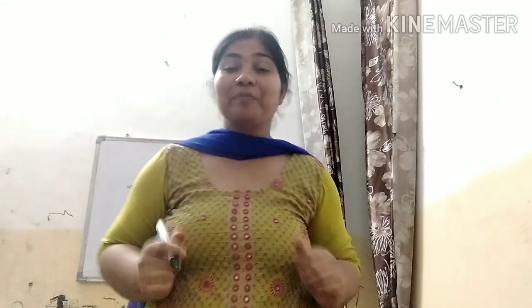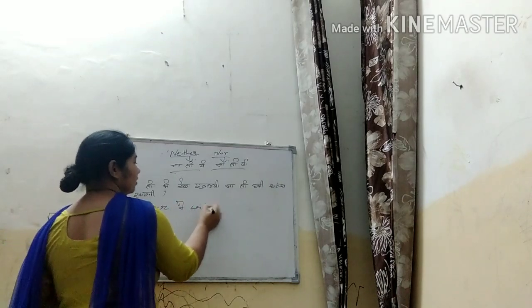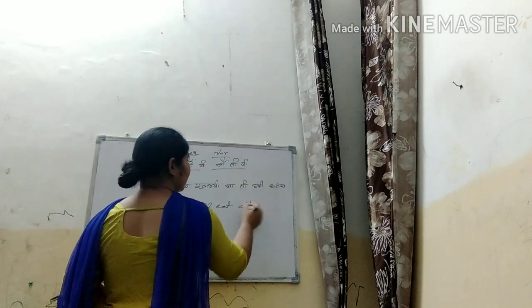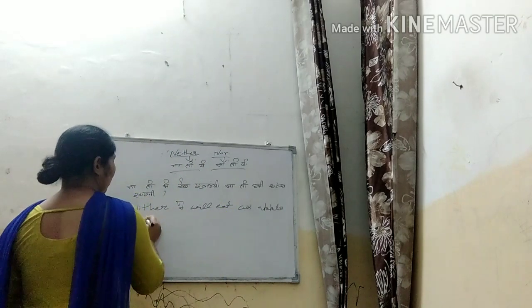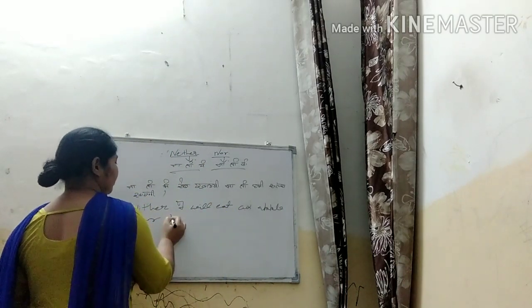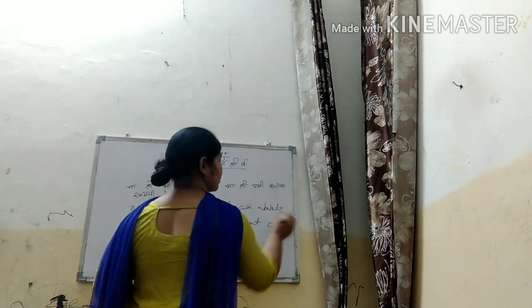The Hindi sentence is: 'Na to honey santra khaegi'. Now how will we make its English sentence? Neither I will eat apple, nor honey will eat orange. This is very simple — you can try a lot of sentences and you can make a lot of sentences, then you can be perfect.